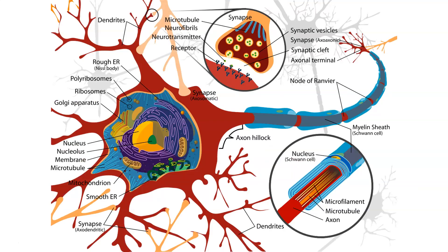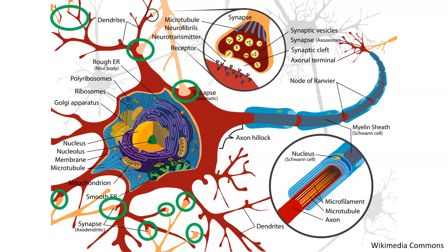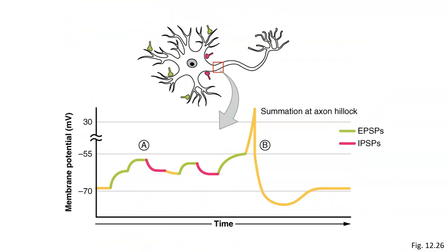When looking at neurons in our body, we see that many of them have inputs from multiple other neurons — in some cases there can be thousands of inputs. In this figure, we see a neuron receiving input from several other neurons. In green we have excitatory inputs, which will cause EPSPs to occur if they are stimulated. In red, we have inhibitory neurons that will cause IPSPs to happen in the postsynaptic neuron.